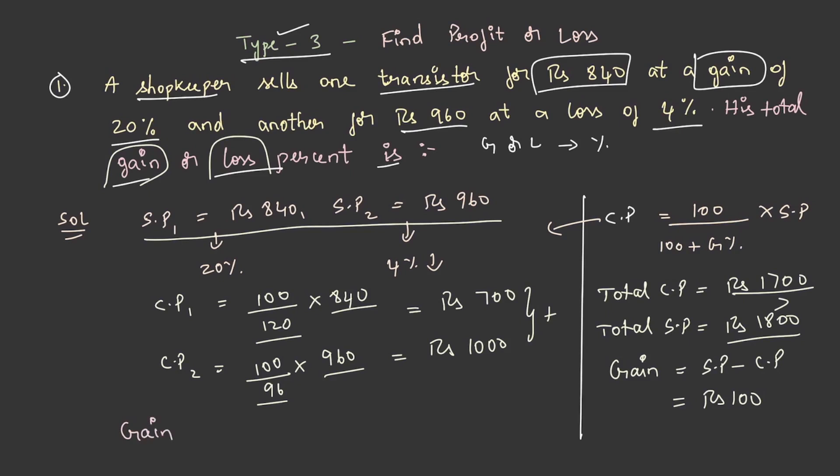Now gain percentage, we are doing this because we are asked to find out the percentage as well. It is equal to gain into 100 by cost price. We know the gain as 100 by cost price is 1700 into 100 and the final answer is 5, 15 by 17 percent.